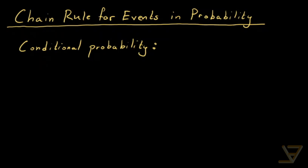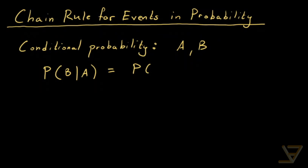The definition of conditional probability is that if we have events A and B, then the probability of B happening, assuming that A has happened — that we know for sure that A happens — is equal to the probability of A intersect B divided by the probability of A.